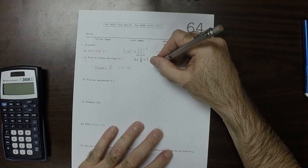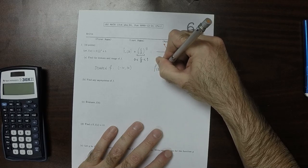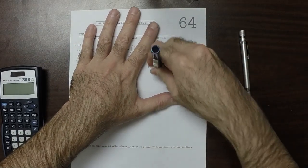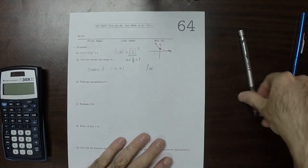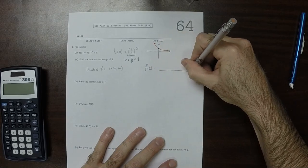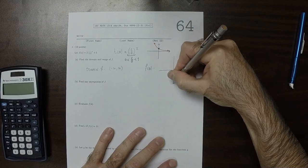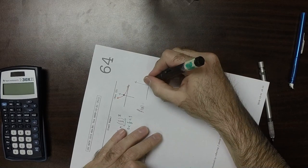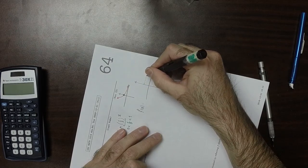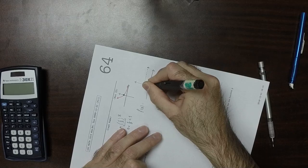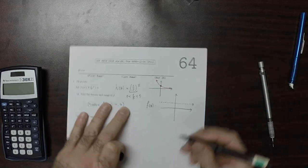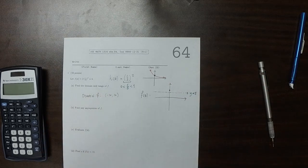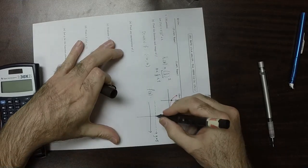So f, plotting it, will be quite similar to the plot of h. Except now it'll be moved up 5. If this is 5, we'll go through that point there, and then decay to the right.